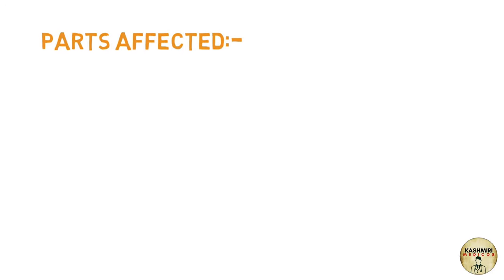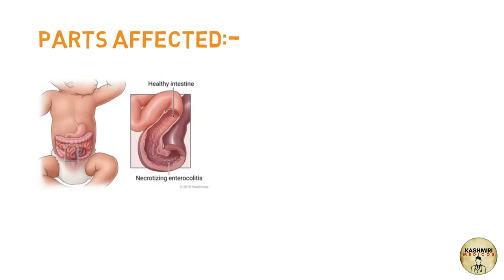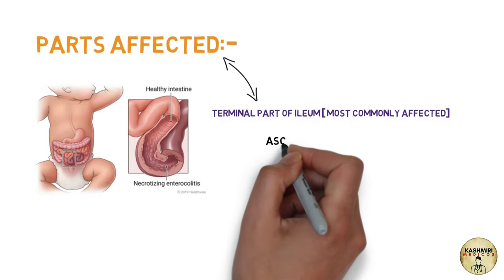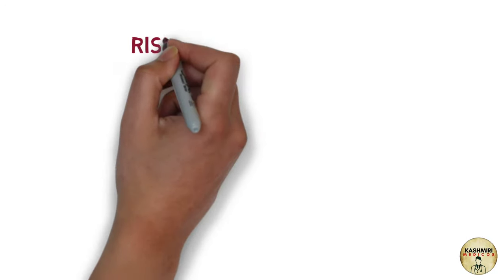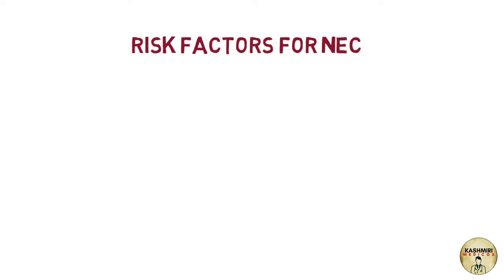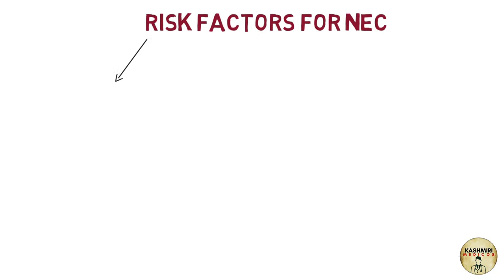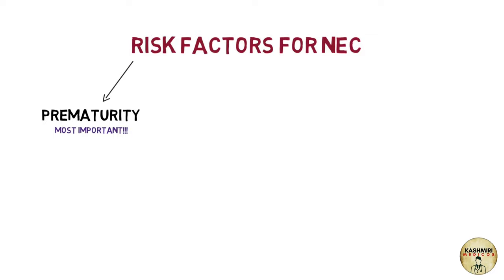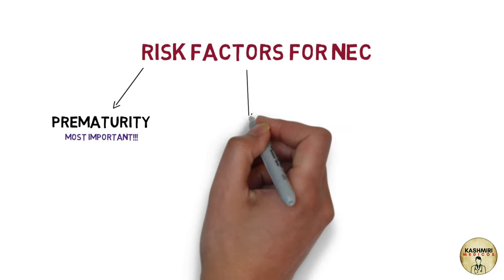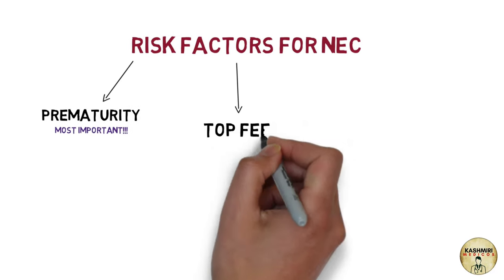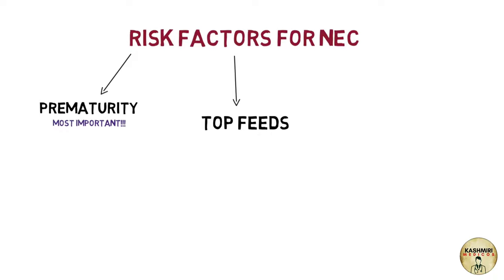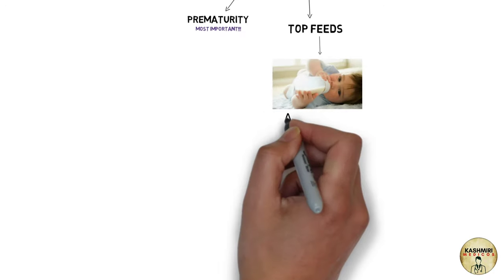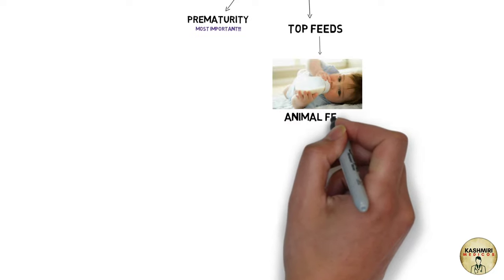The parts of the intestines that are affected are the terminal part of the ileum, which is the most common part, followed by ascending colon. Now the risk factors associated with NEC are prematurity, which is the most important risk factor. The others are top feeds, which are feeds given to the baby other than breast milk — an example would be animal feeds.